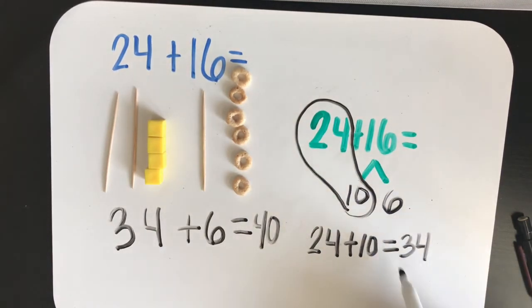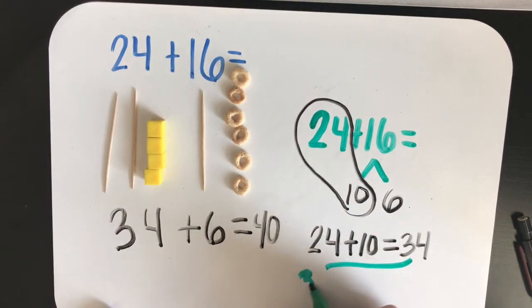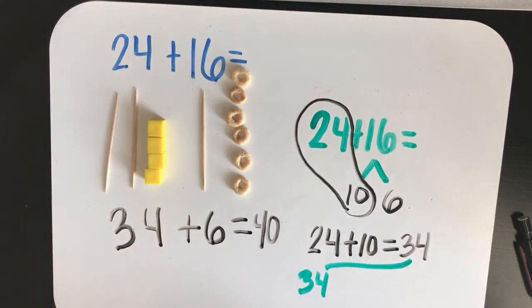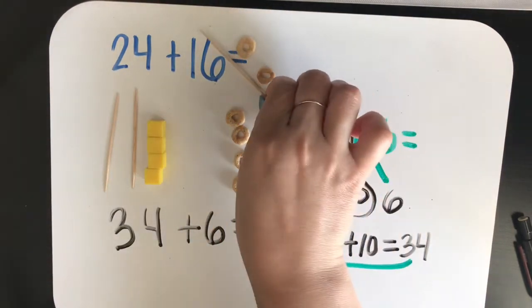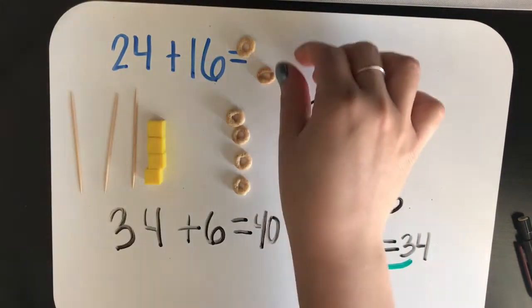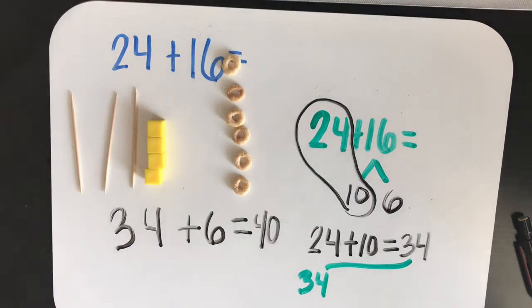And what do we do with the thirty-four now? Bring it down, bring it down, and add. Let's go ahead and bring down the thirty-four. We've added the tens. Now all that's left is to add the ones.